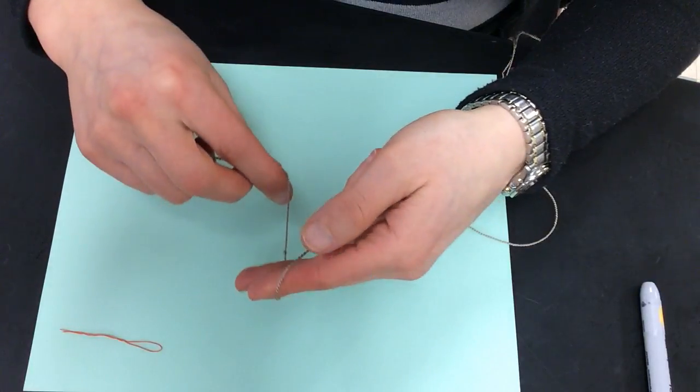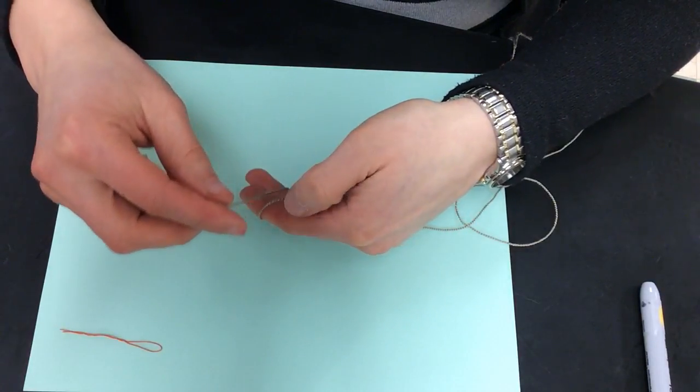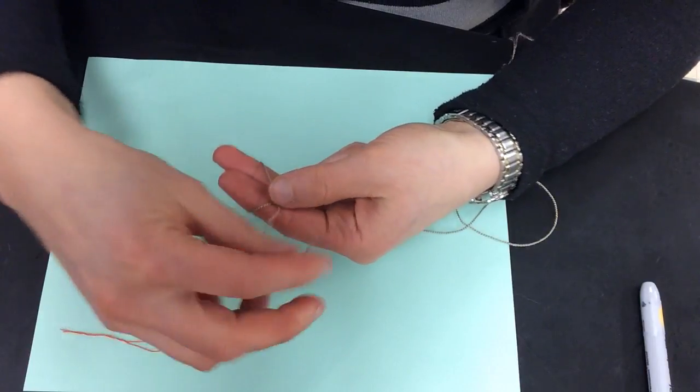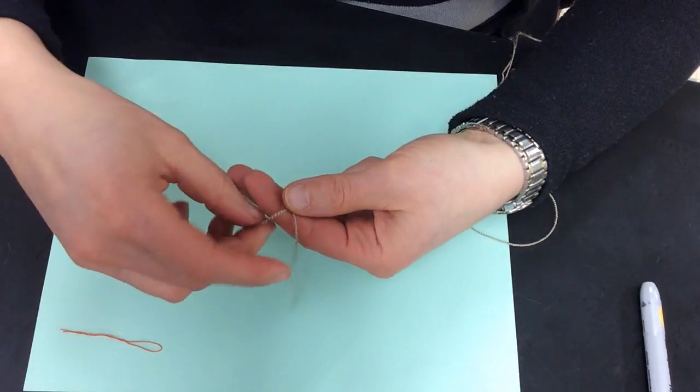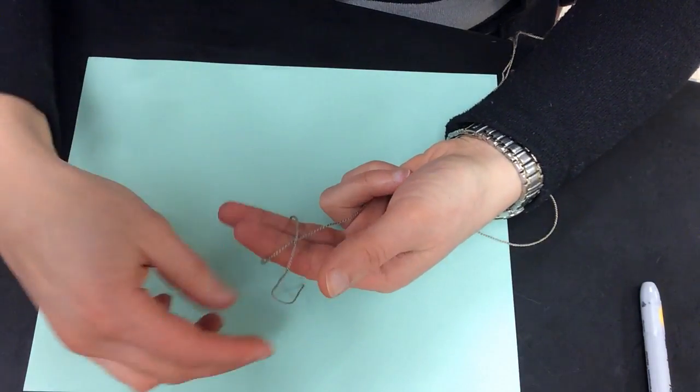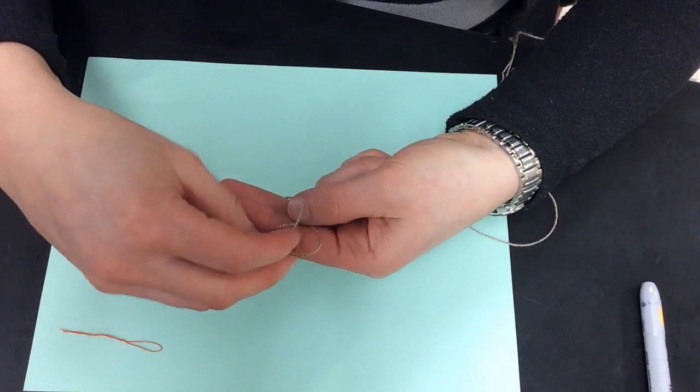So once more I wrap it around. You don't have to do it twice, but I'm going to show it twice here. Wrap it around, pull this just a little bit loose so that I have the X, and then I can take this end and put it underneath.